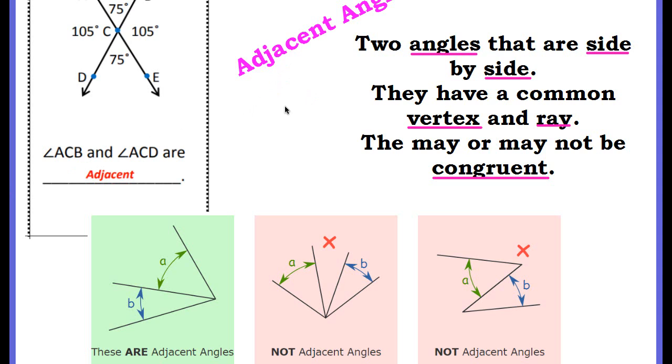The first special relationship is what we call adjacent angles. These are adjacent angles. They are two angles that are side by side. They have a common vertex and ray. They may or may not be congruent.